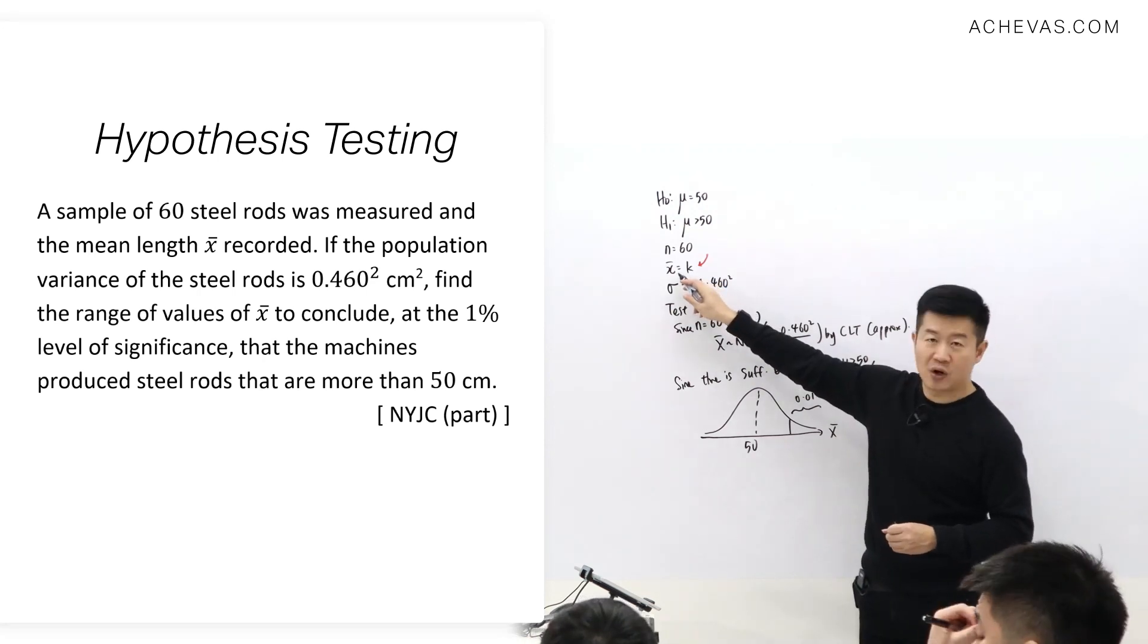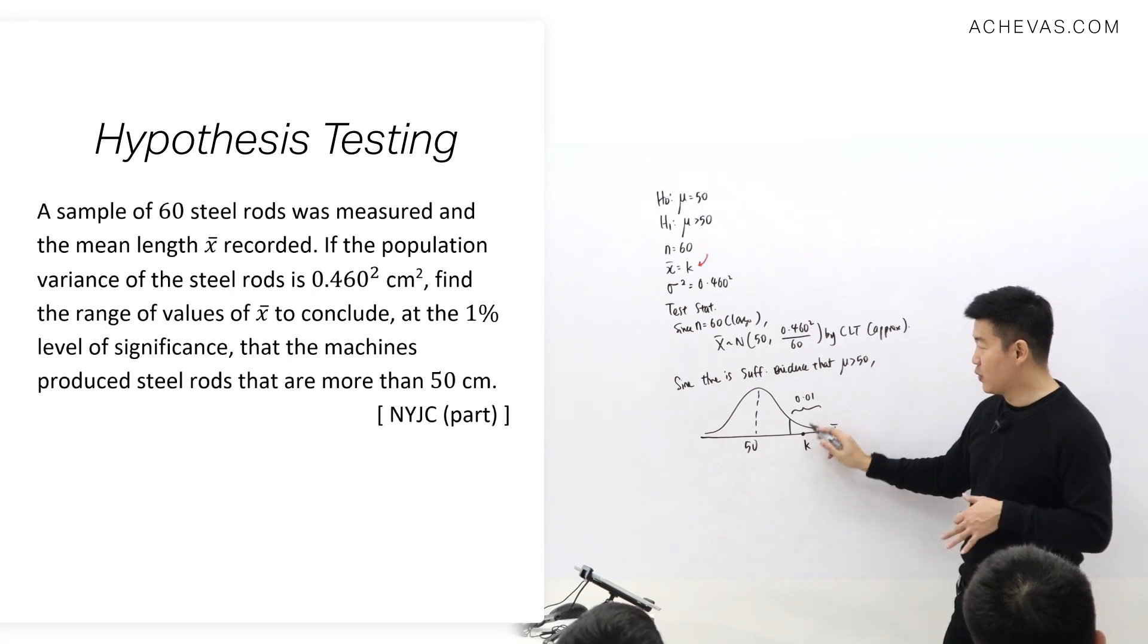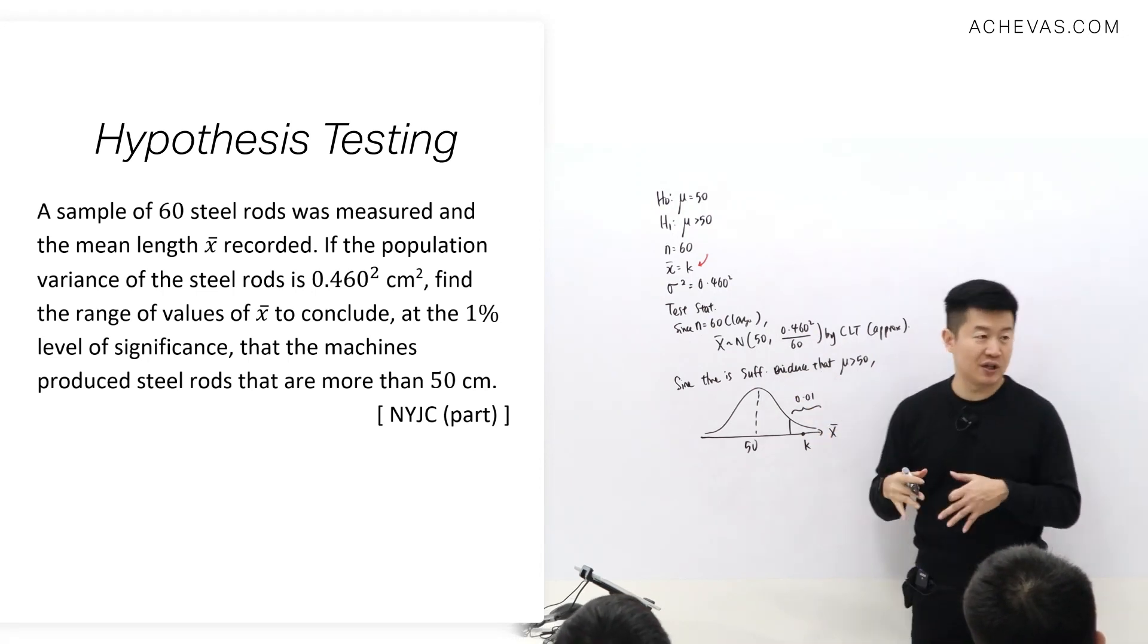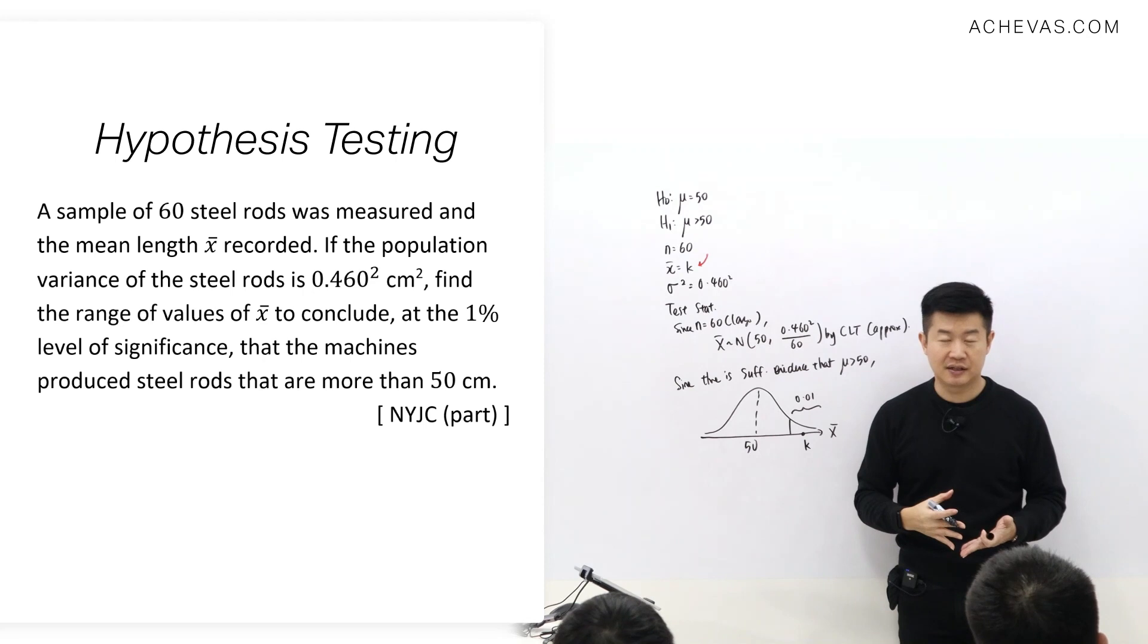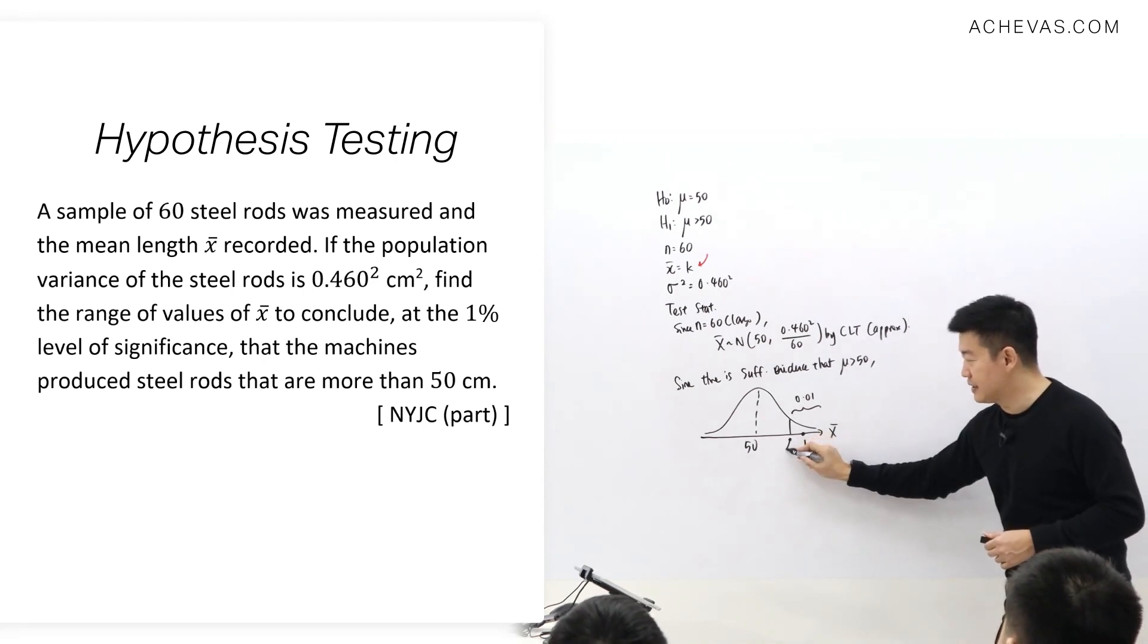Which means that this K, or X-bar, is going to be found here. K is going to be within the critical region so that there is sufficient evidence that there's an increase. So what I'm going to do is try to find out what is this number here.